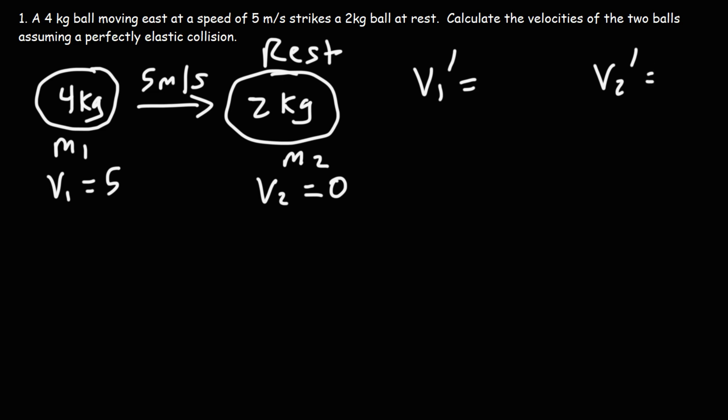So here's a formula that will help us to do that. Let's start with ball 1. V1 prime or V1 final is going to be the difference of the two masses divided by the sum of the two masses times the initial velocity of ball 1 plus 2 times the second mass divided by the sum of the masses times the initial velocity of ball 2.